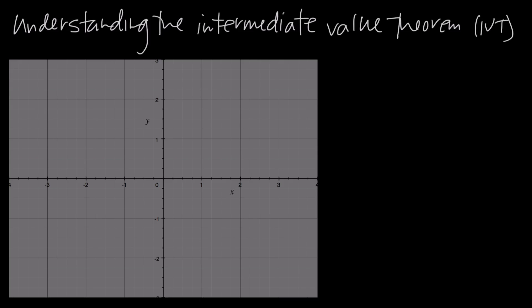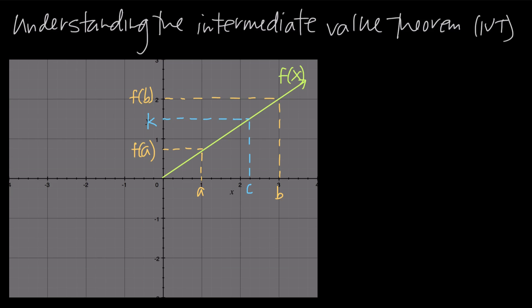In this video, we're talking about the Intermediate Value Theorem — sometimes abbreviated as IVT. The Intermediate Value Theorem sounds a lot more complicated than it actually is. The reason we have it as a theorem is because it can be helpful to prove that a function has a solution or a root on a specific range. Let's talk about what the Intermediate Value Theorem actually tells us.